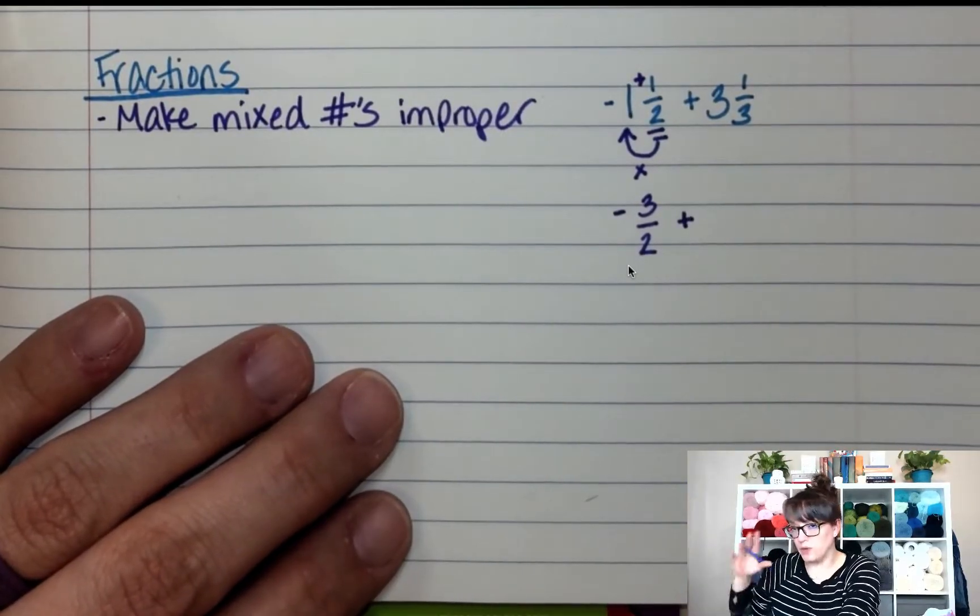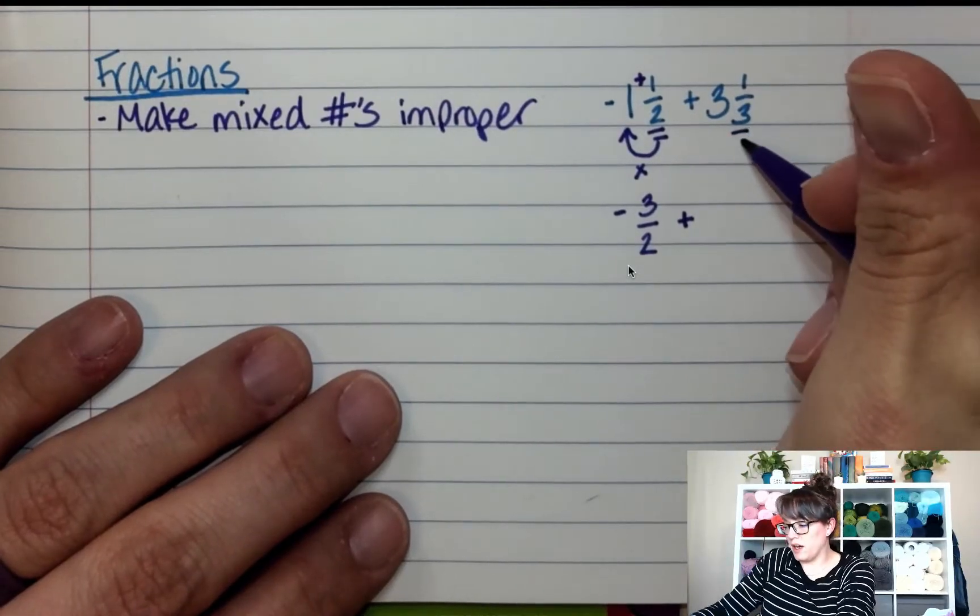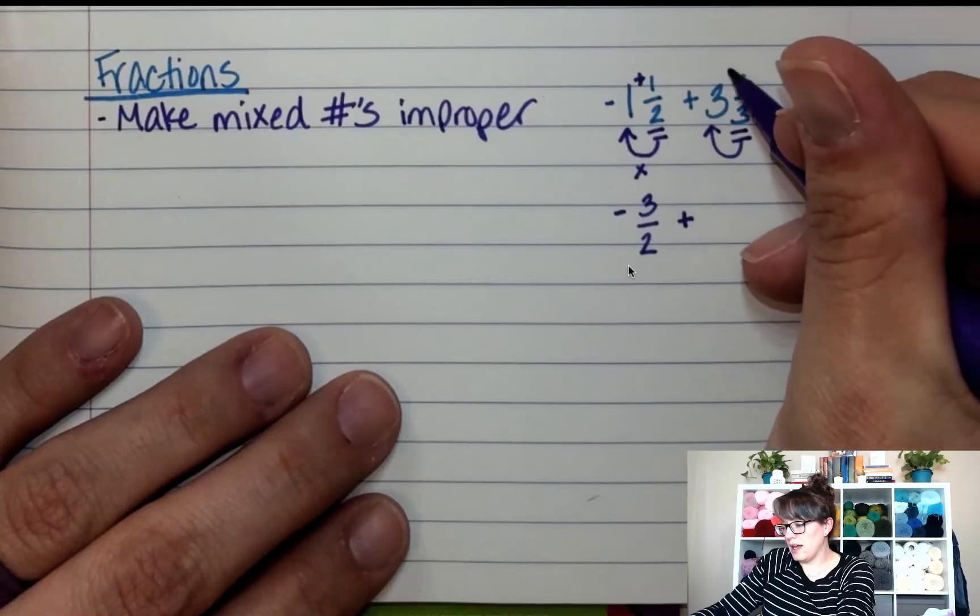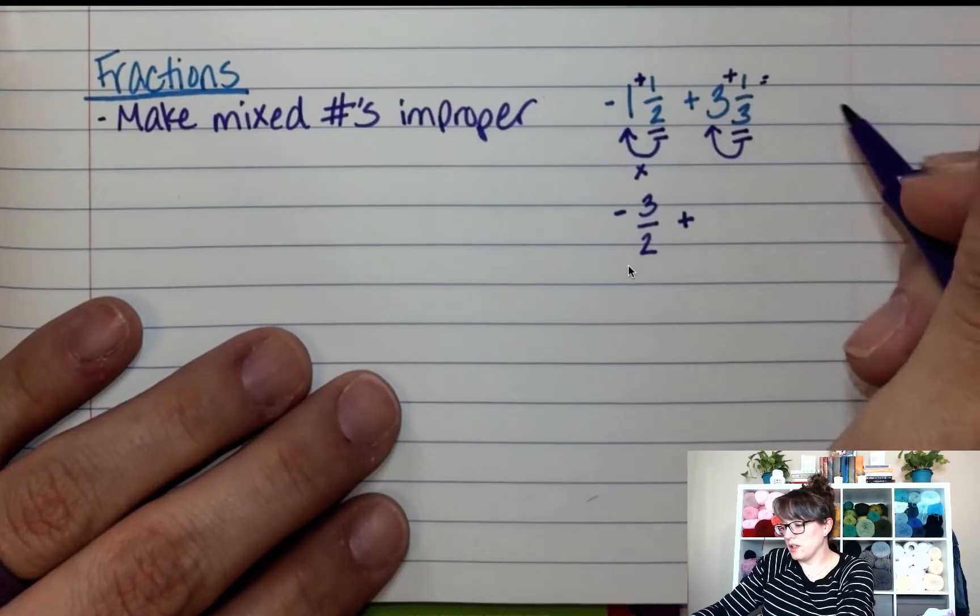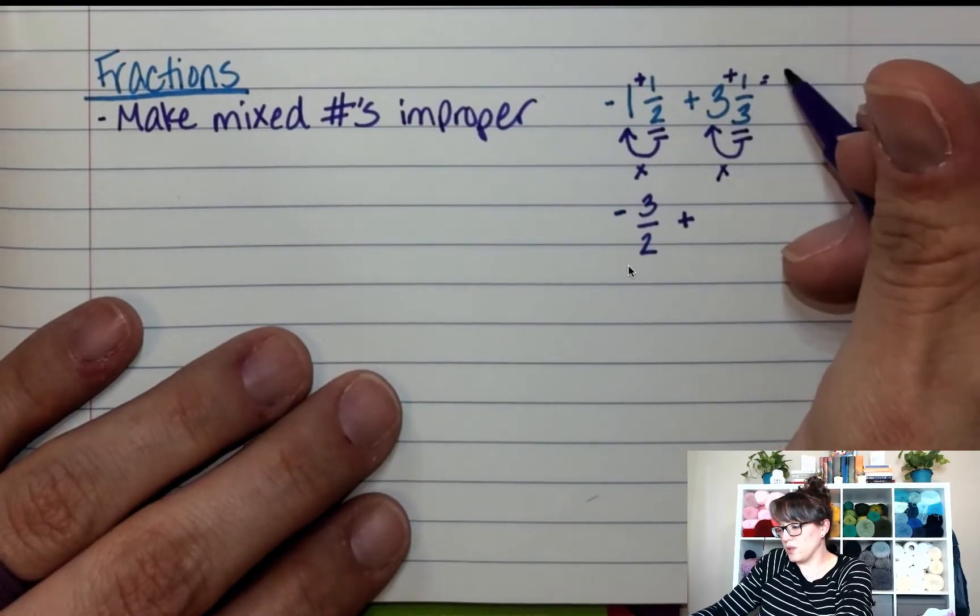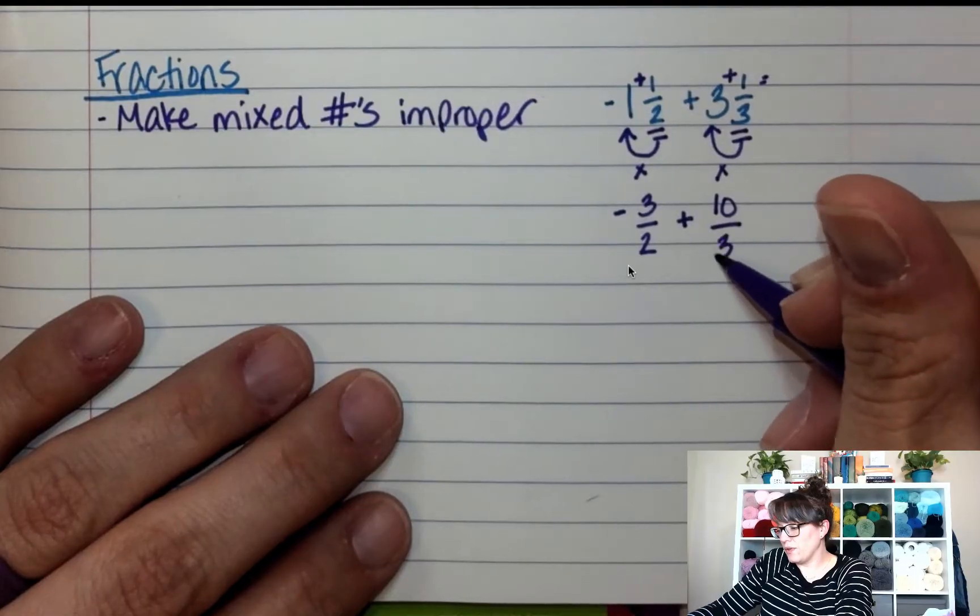All right. What about this one? How would we do three and one third? You take the denominator, multiply it by the whole number, add the numerator. So this is three times three is nine plus one is ten. So this one is ten-thirds.